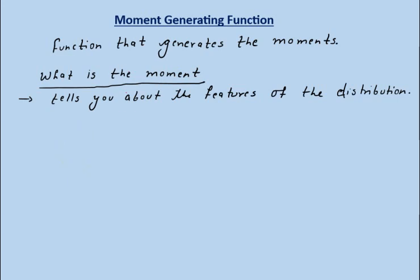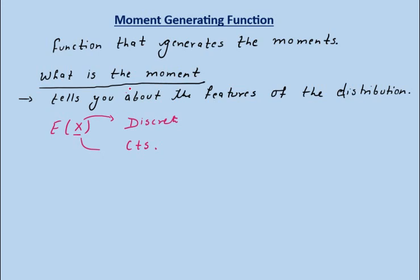The moment generating function is a function that generates the moments. Moments are the expected values of a random variable — E[X] — where X can be a discrete or continuous random variable. This expected value of X is the first moment about the origin.